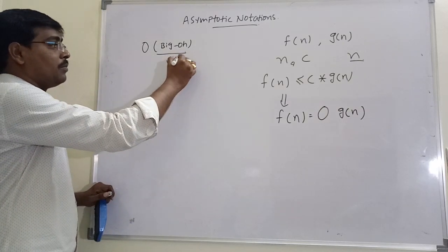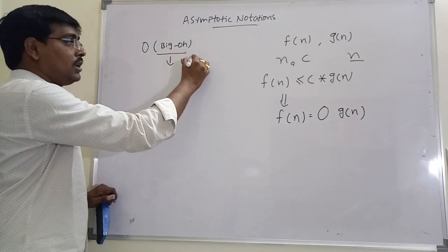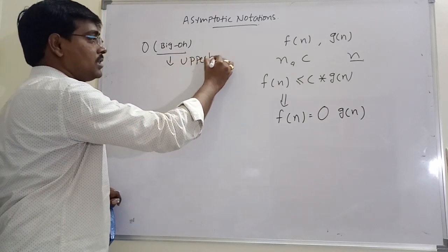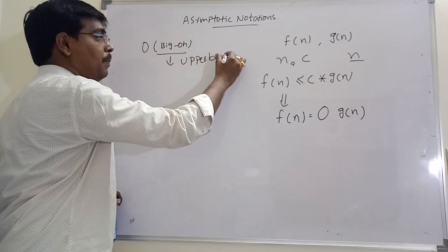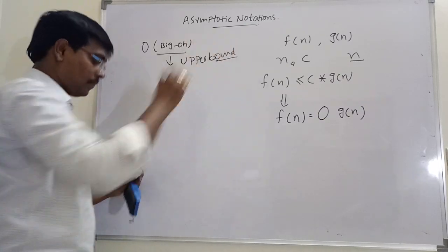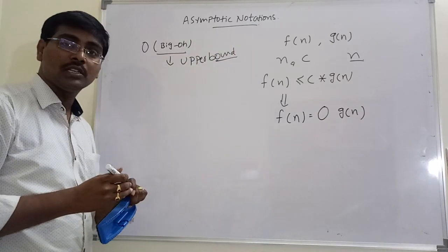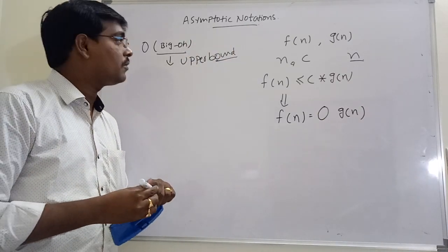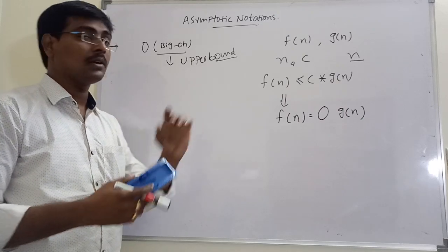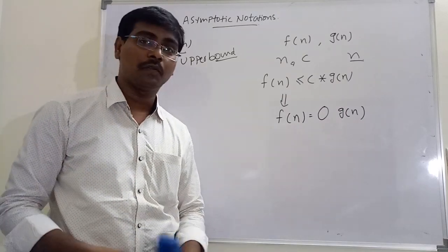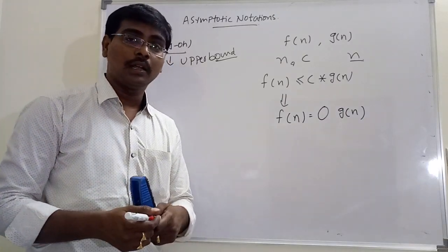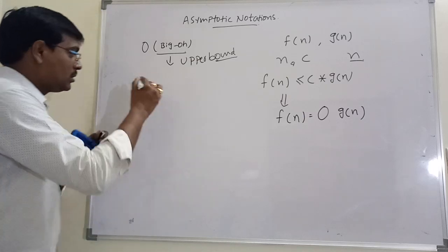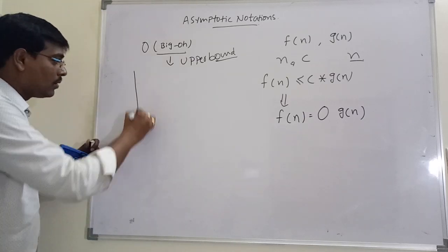Big O notation specifies the upper bound of the algorithm, that means the maximum amount of time taken by the algorithm.